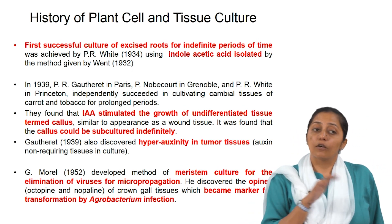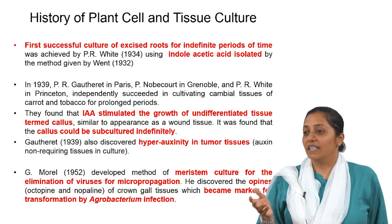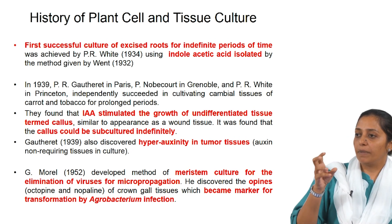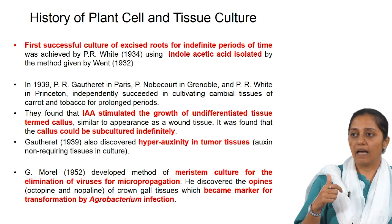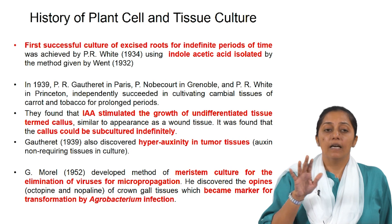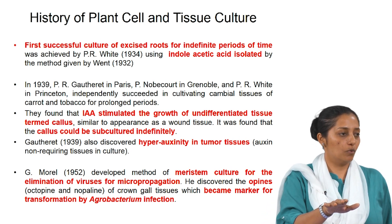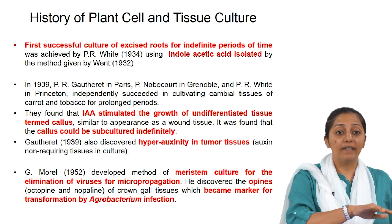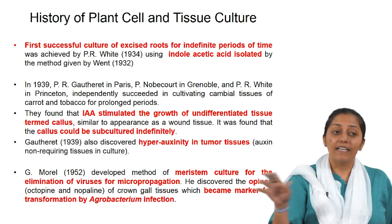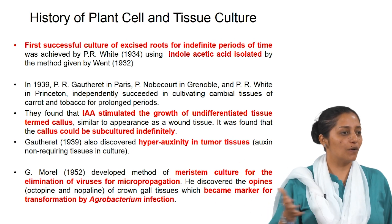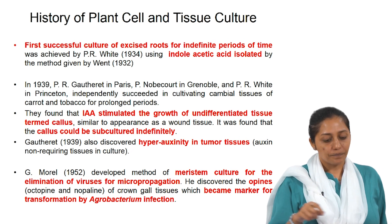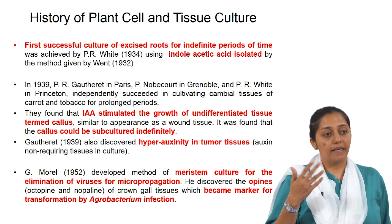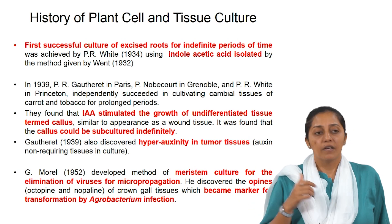Then came agrobacterium-mediated transformations, where people found that these natural vector systems can cause crown gall disease. When people tested the crown galls, they found hyperauxinity — meaning the galls did not require any hormones in the medium to continue their growth. This was detected in parallel with advances in analytical and microscopic techniques. What they found in crown galls was that genes were present that were inherently producing auxins in large amounts.